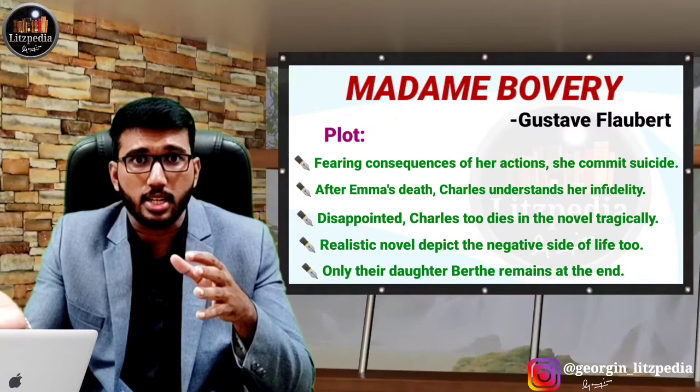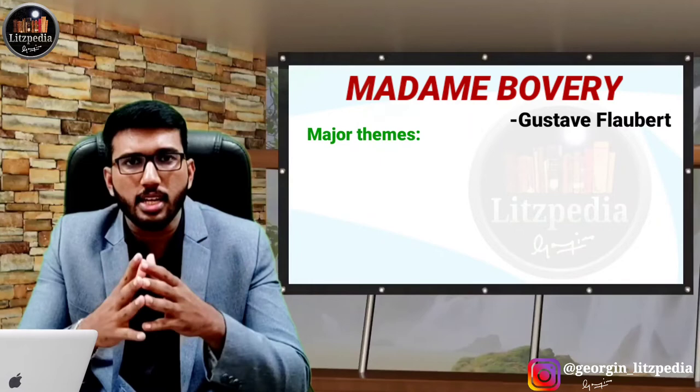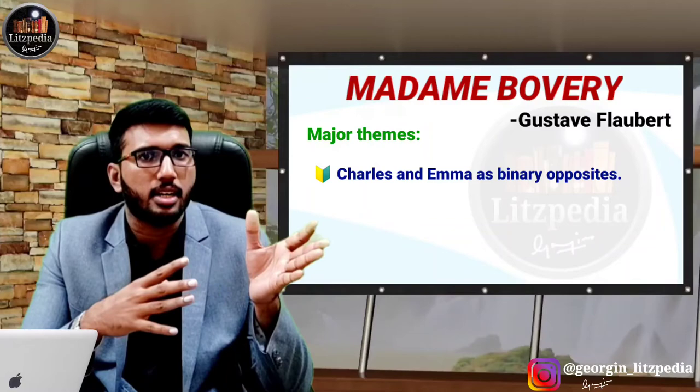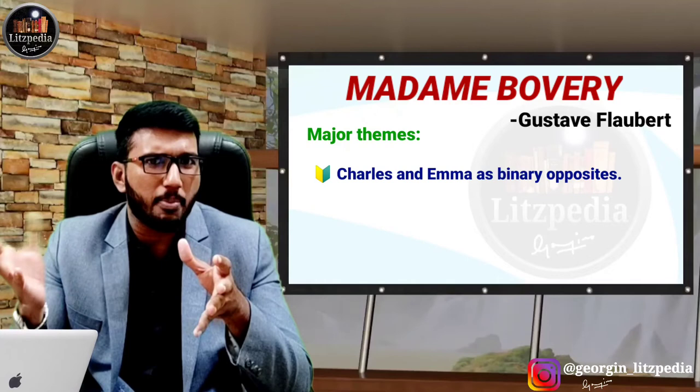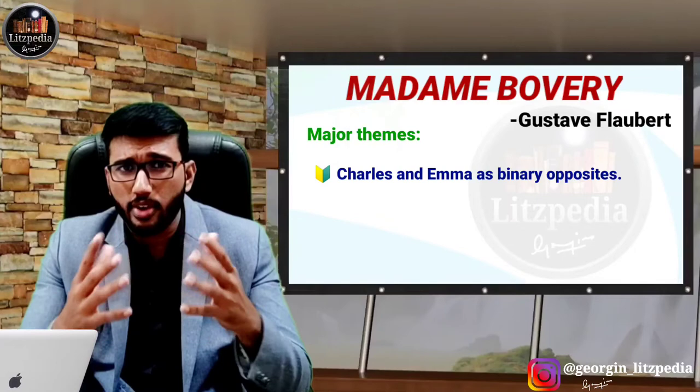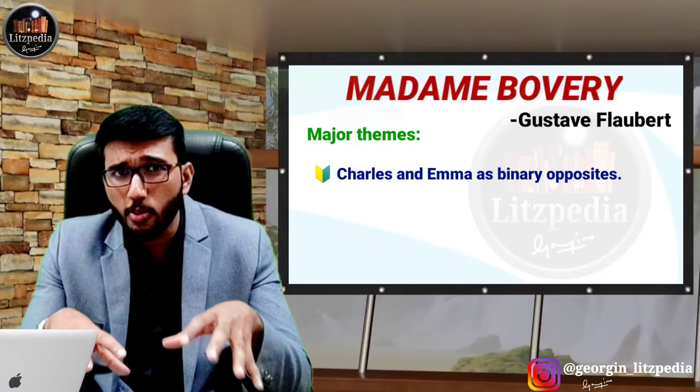Regarding the themes, we can see the binary opposites. Charles Bovary is an impassionate, dull person, whereas Emma is a very passionate person in affairs. They both do not match together. In a positive aspect, Charles is more like a person who lives in reality, and Emma is more like a fantasy kind of person. In real life, such fantasy does not work — that is the kind of message Flaubert tries to give through this novel.